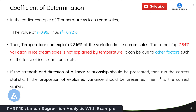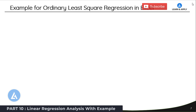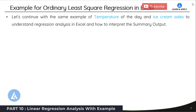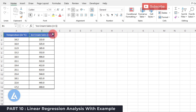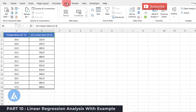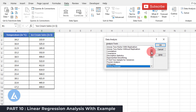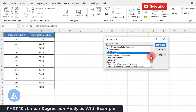This is an introduction to linear regression analysis. Now let's take an example and understand how we can perform linear regression analysis in Microsoft Excel using ordinary least square regression. We'll continue with the same example of temperature of the day and ice cream sales. This is the data for temperature in degree Celsius in one column and ice cream sales in dollars in the second column. Copy this data to Microsoft Excel, go to the Data tab, and select the Data Analysis option. Scroll down and select the Regression option, then click OK.